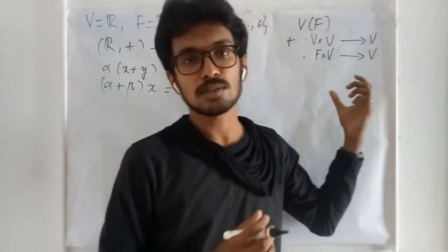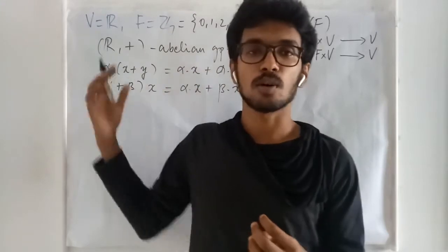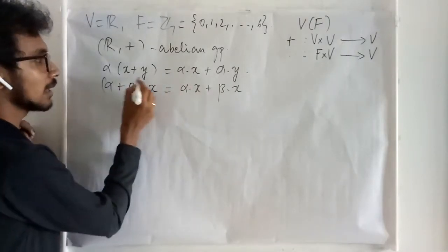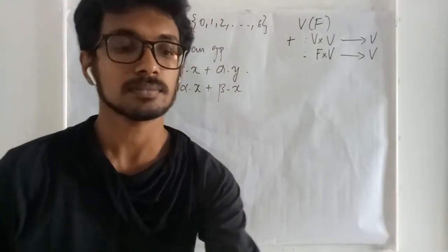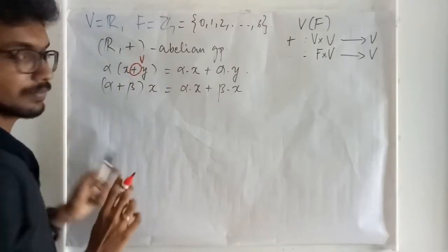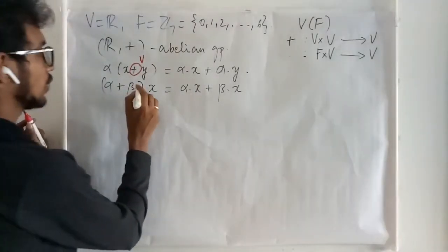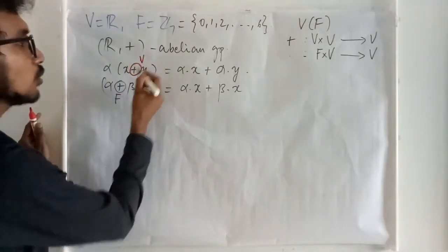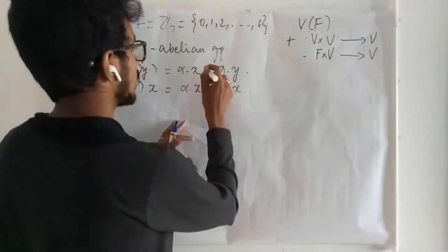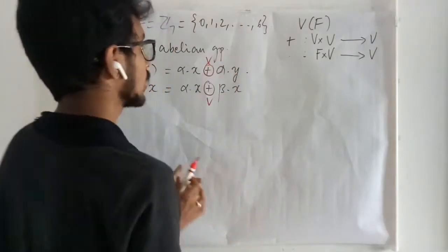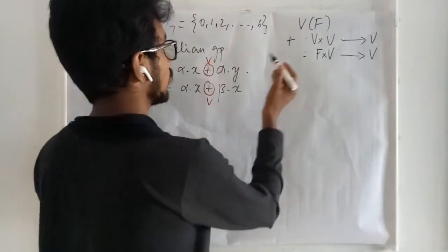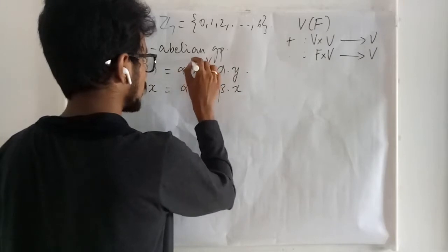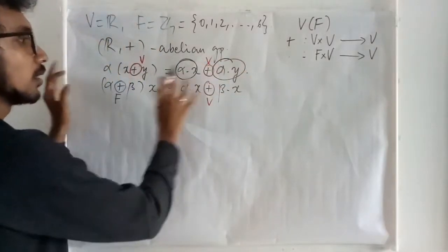Having defined these two mappings, we go through the required conditions. The operation here is taking place on V, and there is also an operation on F. These two additions are different — the additions in V are between elements of V, and the result is going to be in V.